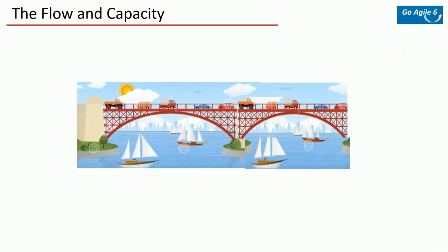Now let's look at flow and capacity. Imagine there is a bridge — at any given time there cannot be more than 100 vehicles on the bridge; that is the maximum capacity. Technically you could fit in 200 cars at the same time, but if you allow so many to continuously go, what happens? It can be chaos, traffic mess, delays, accidents — and it can even collapse. So never maintain at full capacity; you won't have a smooth flow.